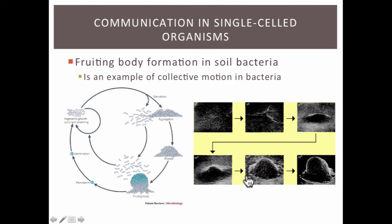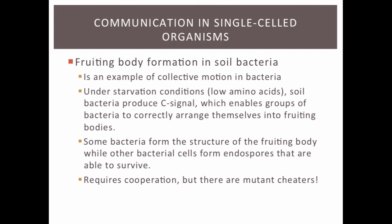Finally, we have fruiting body formation in soil bacteria — an example of collective motion where bacteria find one another and move in unison. Under starvation conditions or a low concentration of amino acids, soil bacteria produce something known as a C signal. The C signal enables groups of bacteria to correctly arrange themselves into fruiting bodies. Areas with higher C signal concentration grow in a certain manner, triggering some bacteria to form the fruiting body structure, while others form the tip known as the endospore. The endospore cells are able to survive and can blow off in the wind. Interestingly, some mutant cheater bacteria will grow into an endospore regardless of C signal concentration.